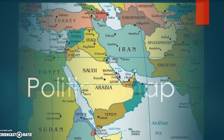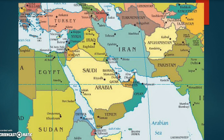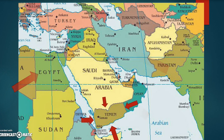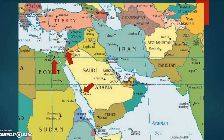A political map — this is a map of the Middle East — shows you countries. Right here we have Egypt, Saudi Arabia, and Iran. These are all different colors and they show the borders. See right there, the borders of Yemen. It also shows important cities and capitals.